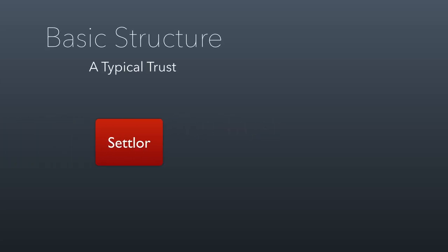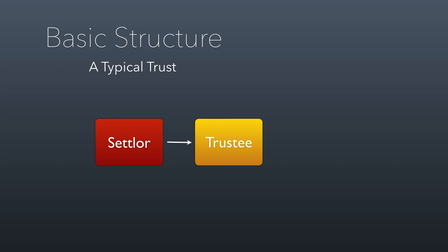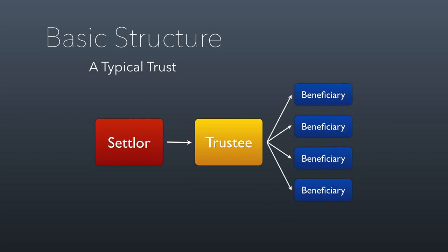Let's talk about trusts. In a typical trust, you have the original owner of property — the settler. Let's say I want to give my house to my kids. I can convey the house to somebody called a trustee, who will own the house subject to rules I put in place by contract. The settler and the trustee sign a contract where the trustee takes ownership subject to the settler's rules, and agrees to manage the property for the benefit of the beneficiaries — for example, my four kids.